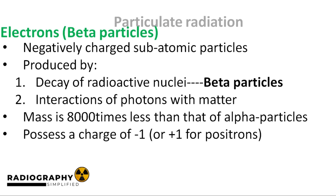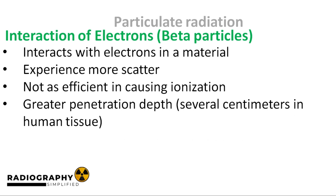Next, we talk about electrons. Electrons are negatively charged and are produced by two means. First, they can be produced by the decay of radioactive nuclei, such as carbon-14 or strontium-90. Electrons produced through this method are called beta particles. The second method of electron production is through interactions of photons with matter. Electrons have a mass that is 8,000 times less than the mass of alpha particles, and they possess a negative charge of one, except for positrons, which possess a positive charge of one. Positrons are basically electrons with opposite charge. Like alpha particles, electrons ionize atoms along their path. However, electrons experience more scatter and are not as efficient at causing ionization due to their lower mass. Also, electrons travel a fair distance before losing all of their energy, and are said to have a greater penetration depth than alpha particles.